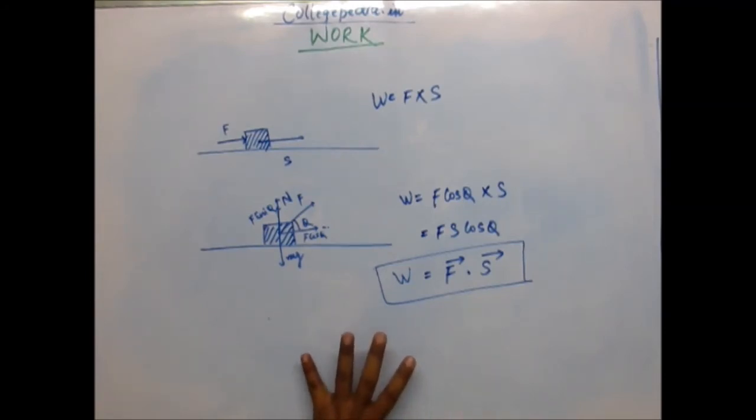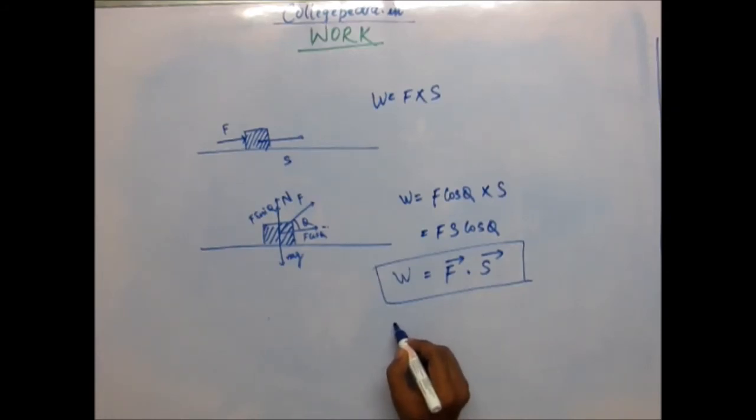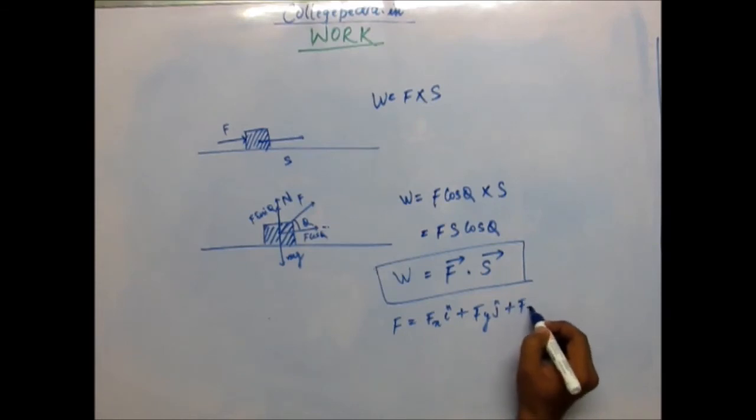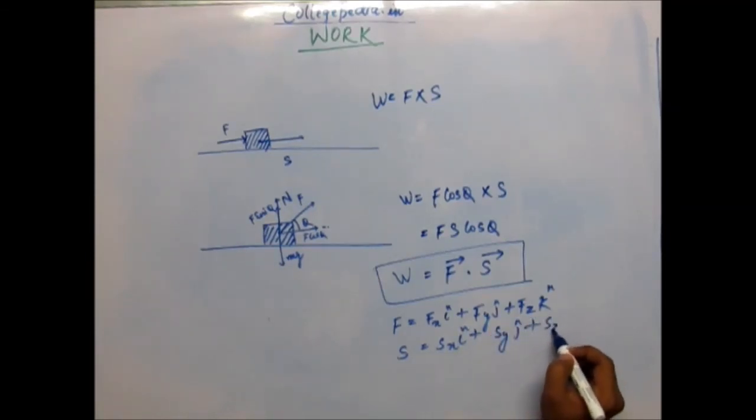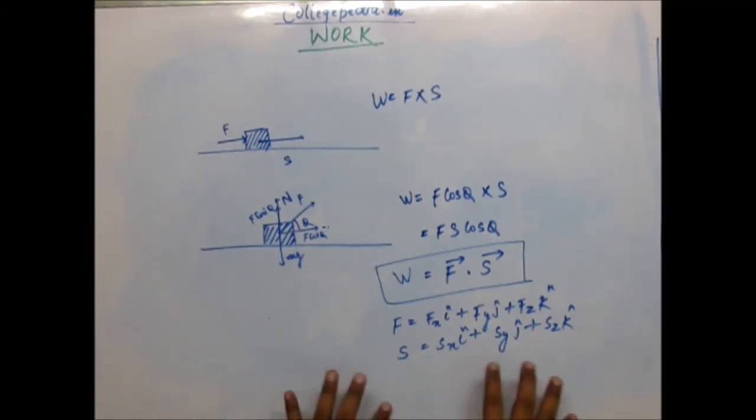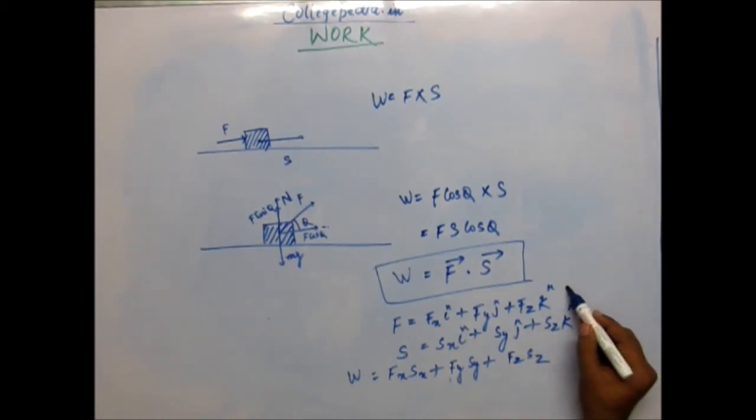This is what the definition of work is: F dot S. If you have force into components in the Cartesian form, like if force is Fx i cap plus Fy j cap plus Fz k cap, and you have displacement as Sx i cap plus Sy j cap plus Sz k cap, then F dot S would be simply - and we have learned how to do the dot product when we write them in Cartesian form - this would be simply Fx Sx plus Fy Sy plus Fz Sz.